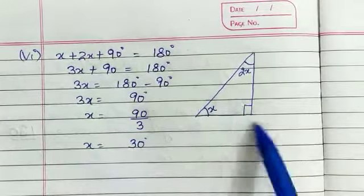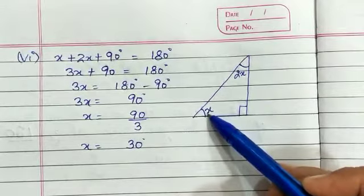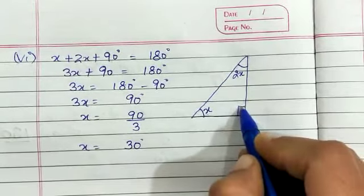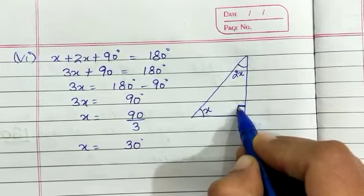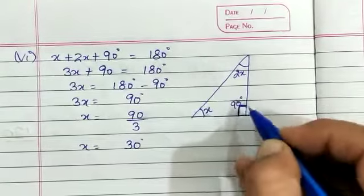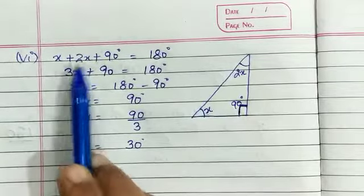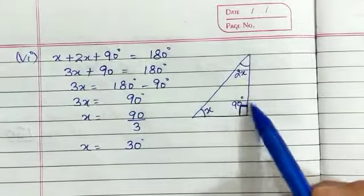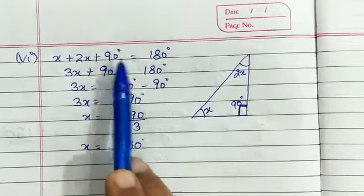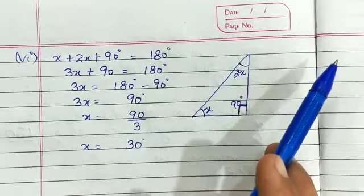One more question. This is a triangle with angles X and 2X. This angle is a right angle — it is perpendicular — so it is equal to 90 degrees. So the three angles of the triangle are X, 2X, and 90 degrees. Applying the angle sum property: X plus 2X plus 90 is equal to 180 degrees.